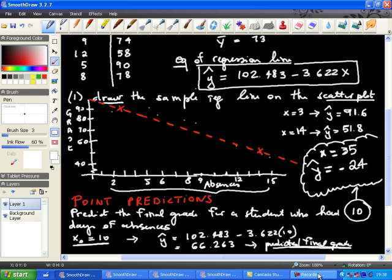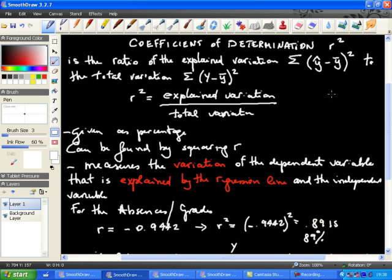And so this sort of doesn't make any sense. And it's the result of doing an invalid prediction outside the range of the x values. The coefficient of determination, r squared,